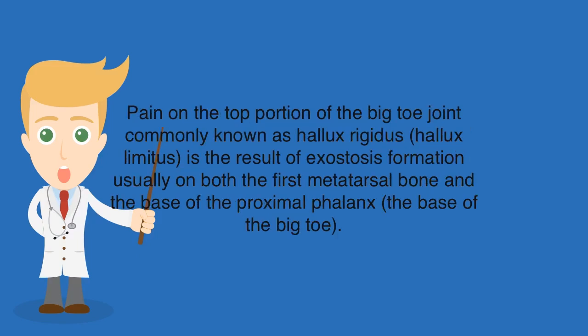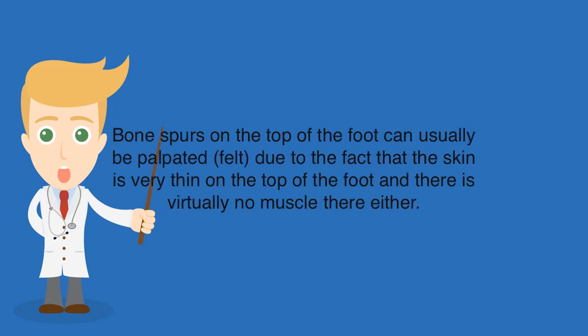Pain on the top portion of the big toe joint, commonly known as hallux rigidus or hallux limitus, is the result of exostosis formation usually on both the first metatarsal bone and the base of the proximal phalanx — the base of the big toe. Bone spurs on the top of the foot can usually be palpated, or felt, due to the fact that the skin is very thin on the top of the foot and there is virtually no muscle there either.